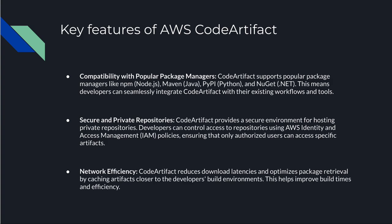Next is network efficiency. Code Artifact reduces download latencies and optimizes package retrieval by caching artifacts closer to the developer build environment. Packages are available directly within your intranet, making retrieval faster and reducing latency. For example, in a recent project, when downloading packages from Maven Central the build job took around 20 minutes. After shifting to Code Artifact, it took less than eight minutes — a huge time improvement because of the caching of these artifacts.